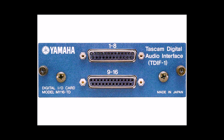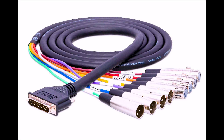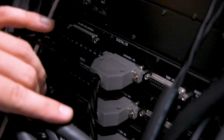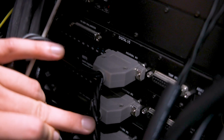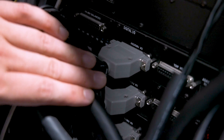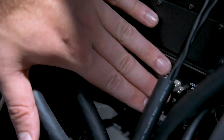The last cable we're going to talk about today is the TDIF, or Tascam Digital Interface. This sends and receives eight channels at 48 kilohertz with one multi-core. It is commonly connected with a DB25 or D-Sub connector with multiple breakout cables. These cables are generally used to plug digital interfaces into analog gear, such as plugging the Neve into one of the 192s we have here.